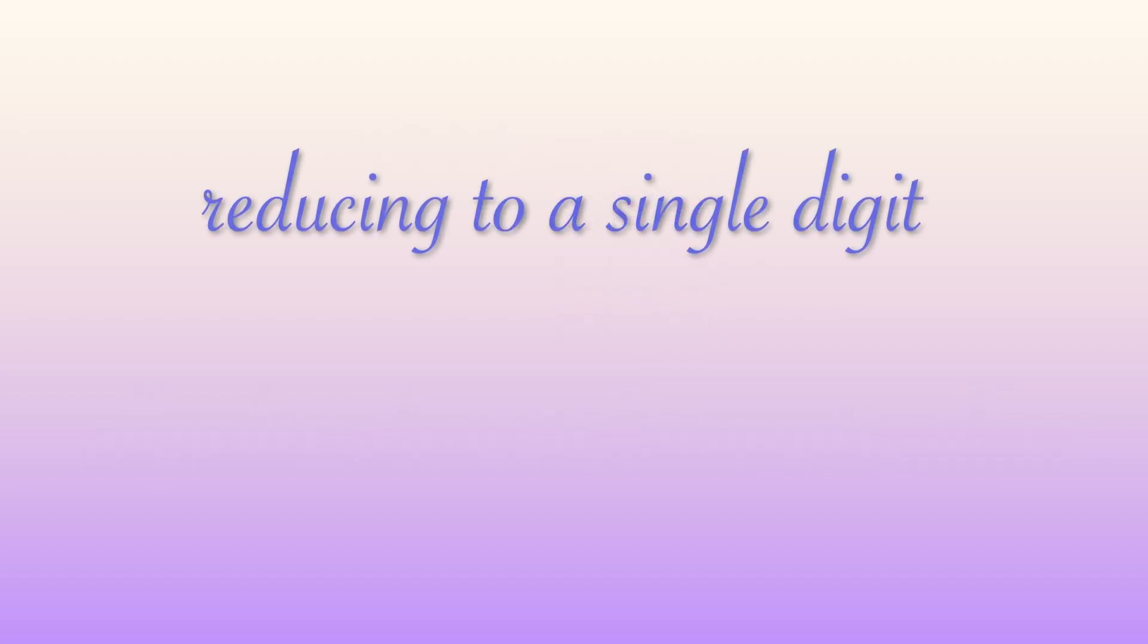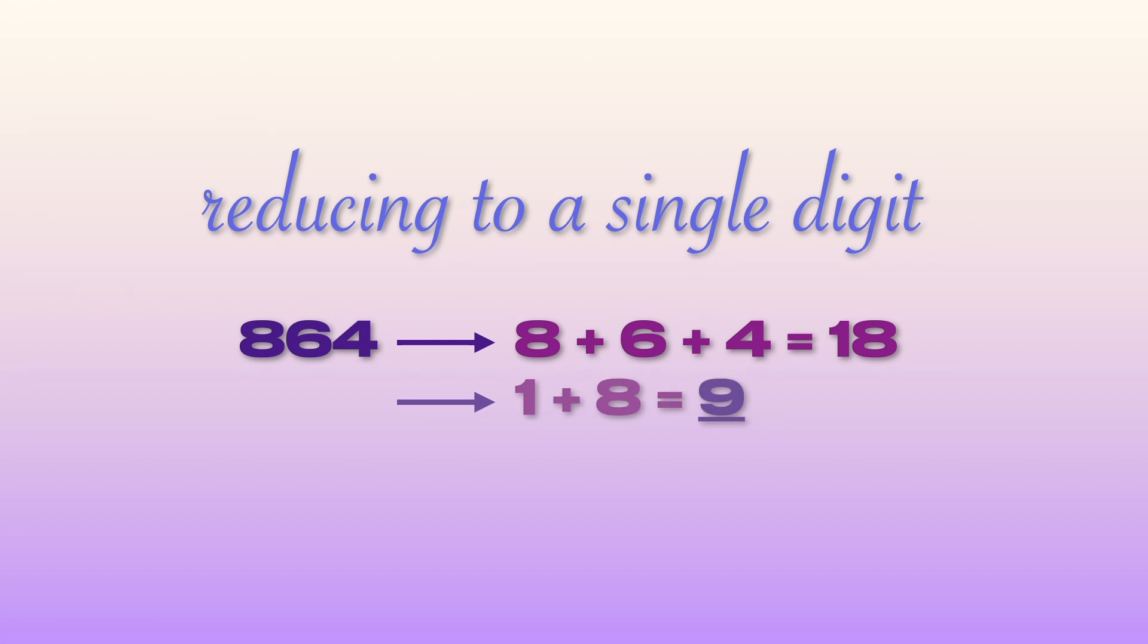A quick refresher on reducing values to a single digit via vortex math. The number 864 reduces to 8 plus 6 plus 4, or 18, which then reduces to 1 plus 8, or 9.